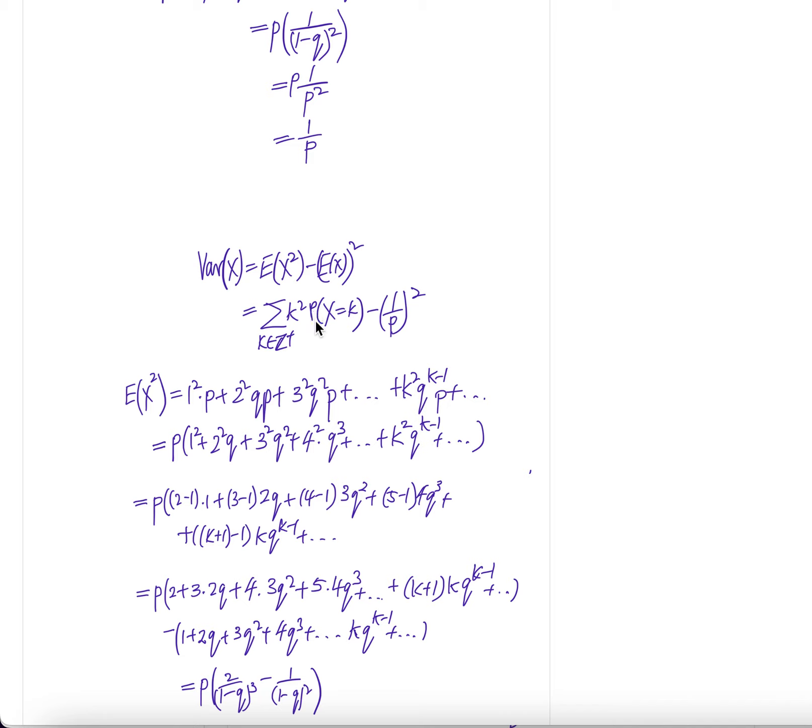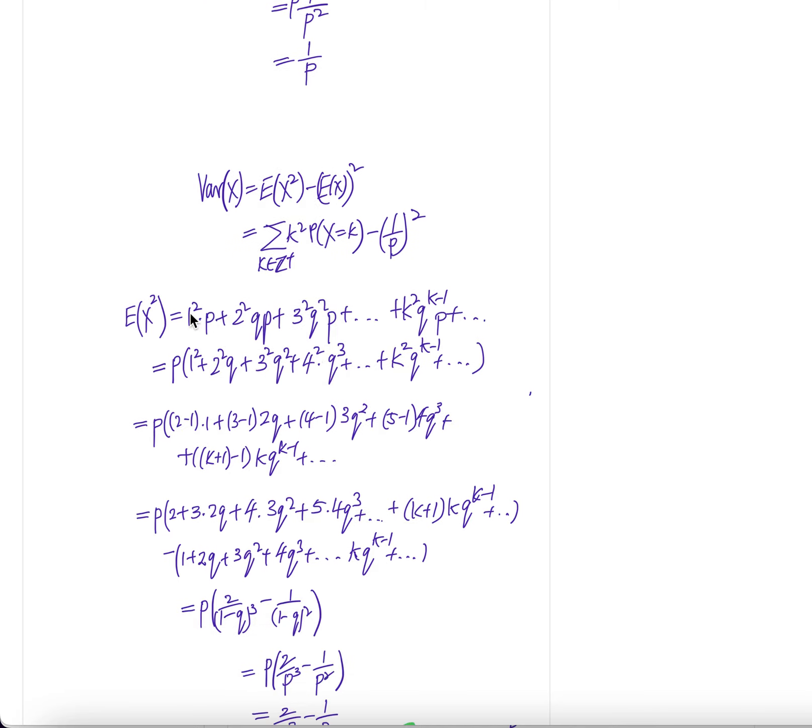Now let's compute expectation of X squared before we can get the variance. From here, you see that it's 1 square, 2 square, 3 square, and then you have k square, just like getting the expectation of X except now you square them. The second part is the same. Now pull out the common p and then you have this piece here.